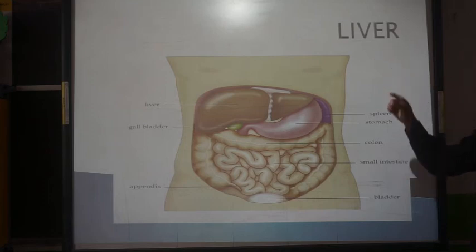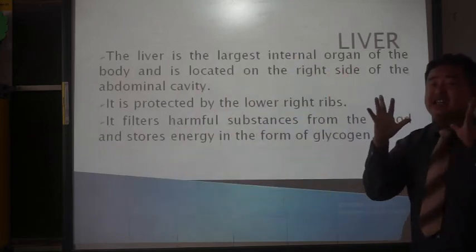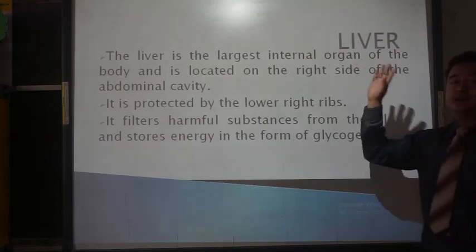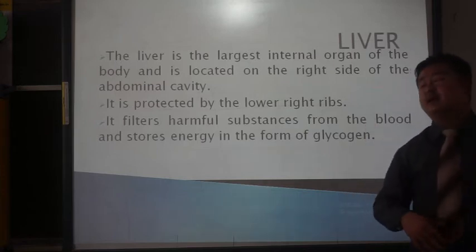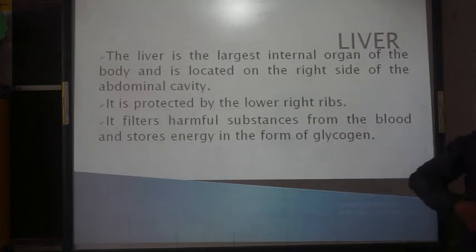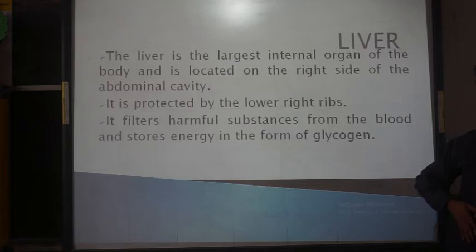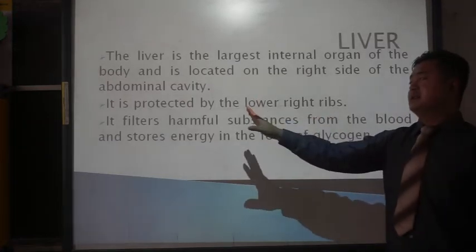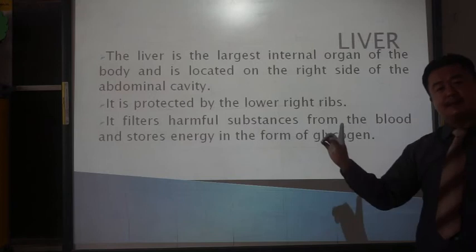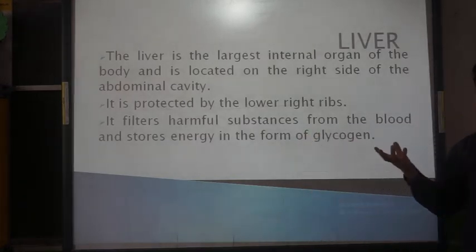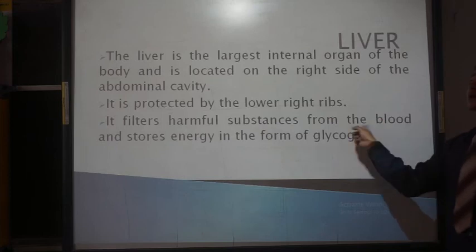The next internal organ we discuss is the liver. The liver is the largest internal organ of the body. It is located on the right side of the abdominal cavity and is protected by the lower right rib cage. The main function of the liver is that it filters harmful substances from the blood and stores energy in the form of glycogen.